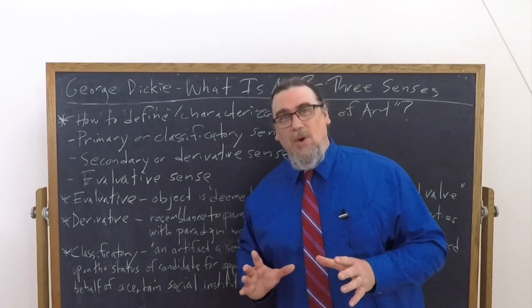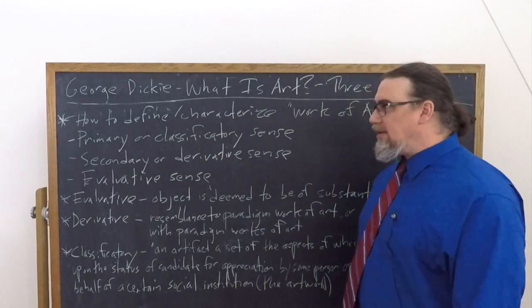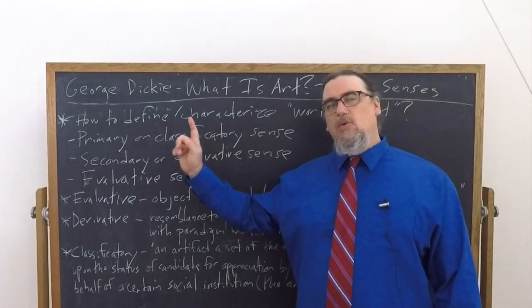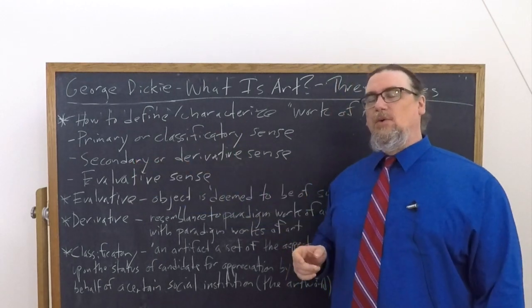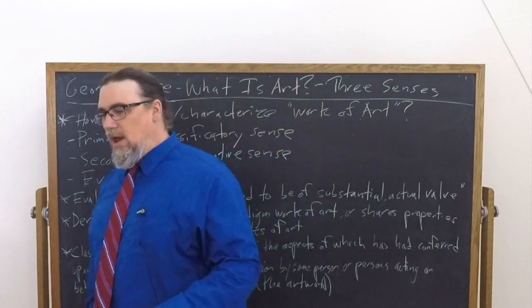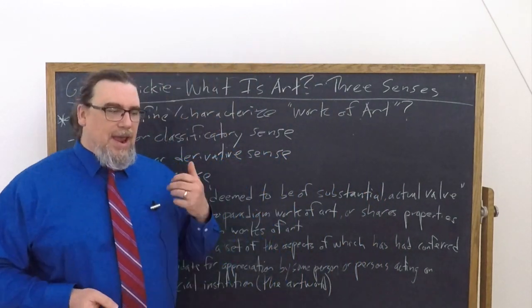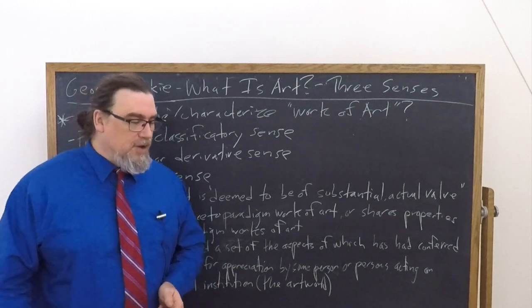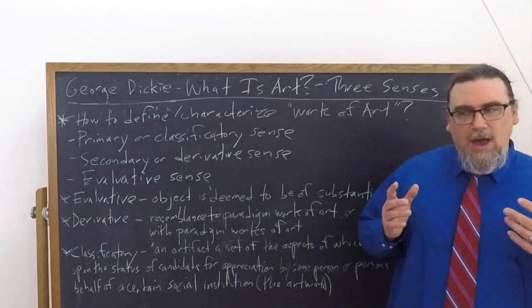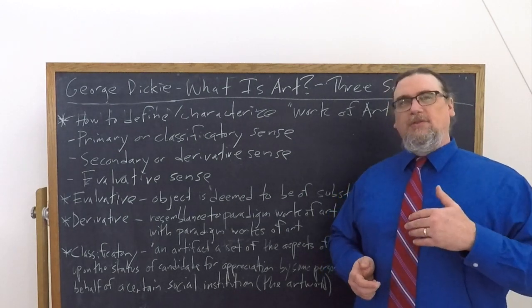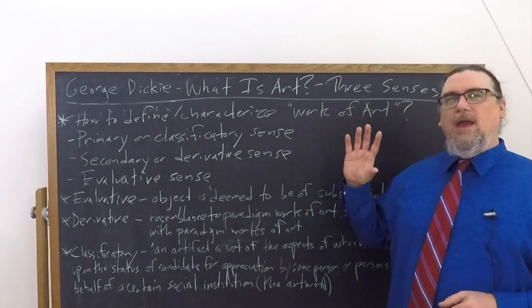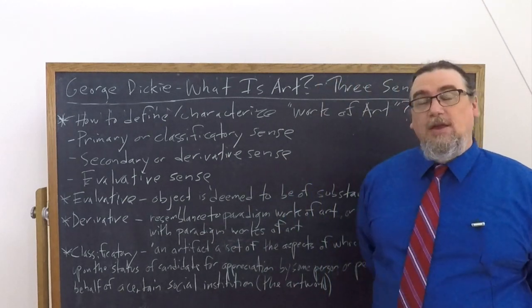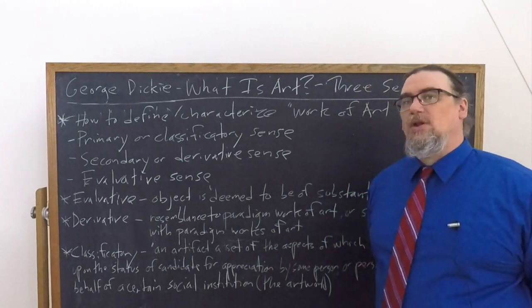And what counts as a work of art definitely fits into that classification. So, what are the three different senses? He summarizes them as a primary or classificatory sense — and that's mostly what he's focused on in this essay — on clarifying that and distinguishing the theory by which he makes sense out of this and provides a working definition, how that differs from earlier attempts to define art in terms of mimesis or imitation or representation on the one hand, and expression of emotion or experience on the other. He's going to appeal to what he calls an institutional conception of art.